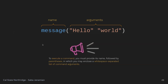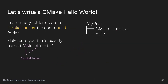Everything in CMake is a command. To call a command, use this syntax: the name of the command, open parentheses, a set of arguments delimited by space or semicolon, then close parentheses. One more important thing I want to emphasize: your CMakeLists.txt must follow this exact naming pattern — capital C, capital M, 'ake', capital L, 'ists.txt'. It must be exactly this format; otherwise the CMake engine will not be able to find it.